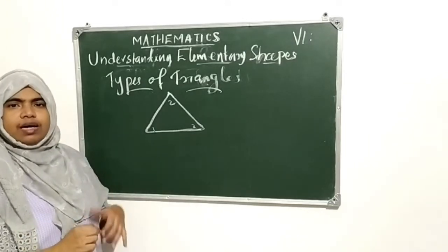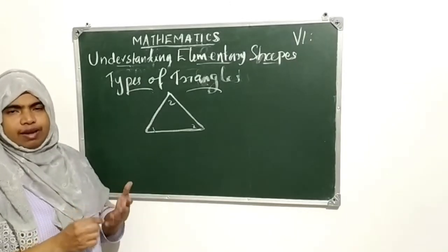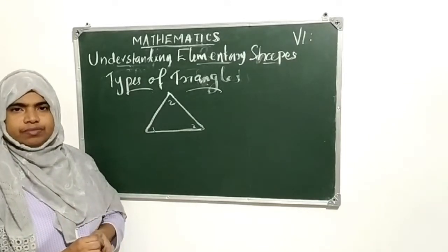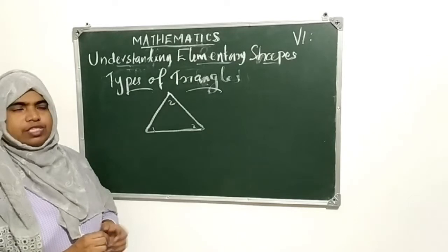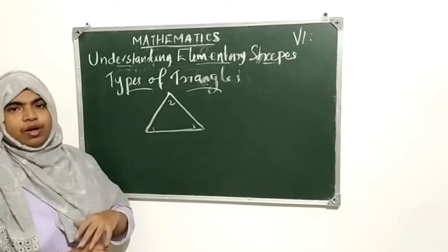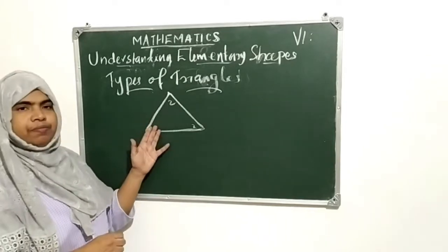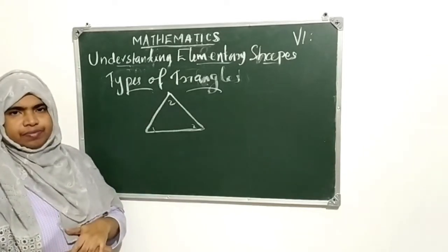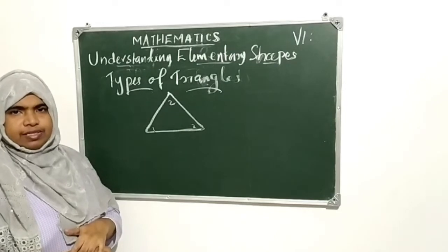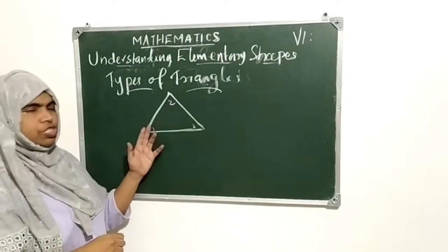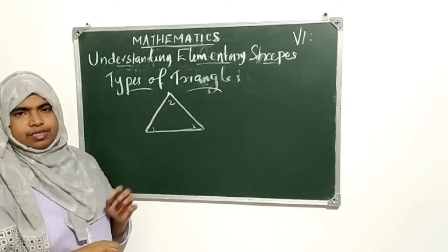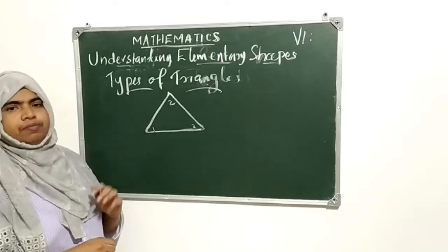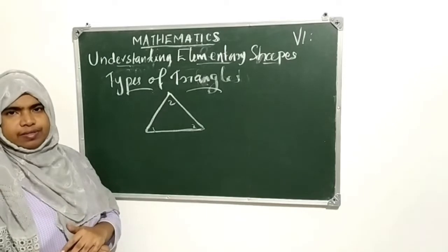Types of triangles — which are the triangles? On the basis of their sides and angles we can name triangles. First, on the basis of sides, how can we name the triangles?